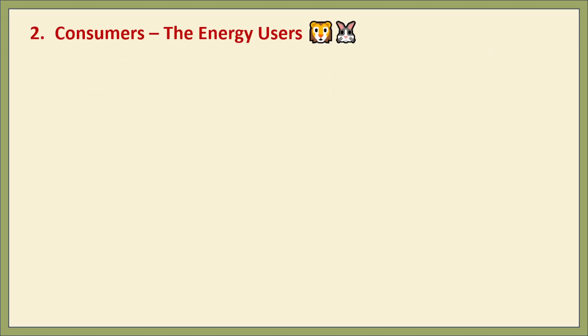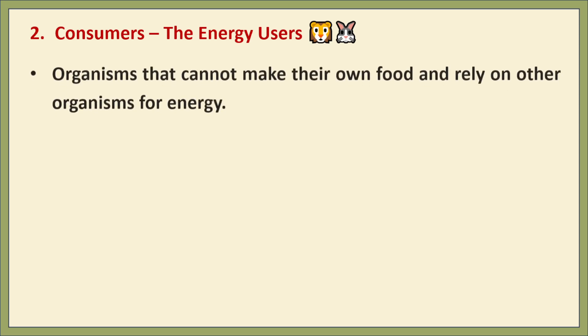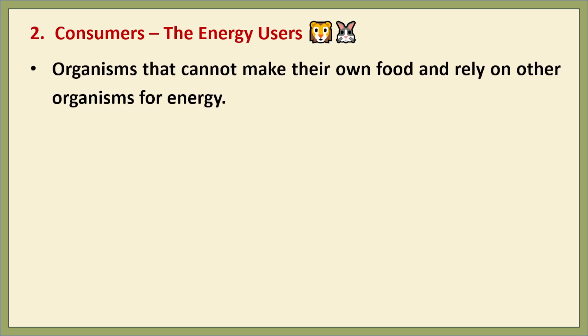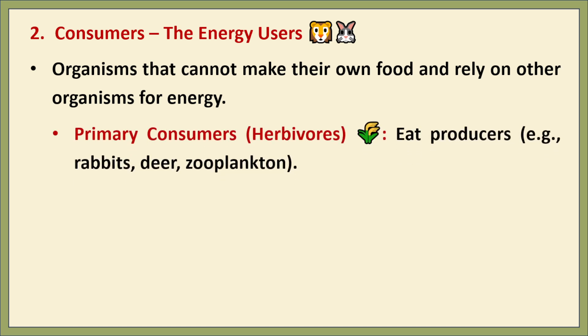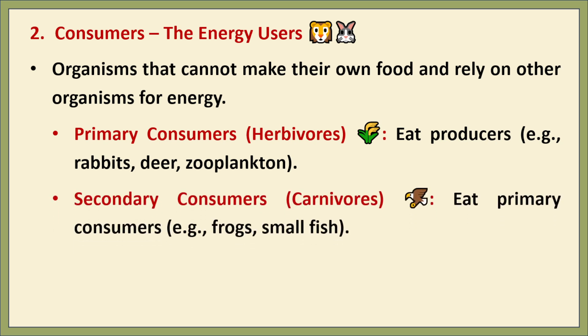The second one is consumers. Consumers are organisms that cannot produce their own food and rely on other organisms for energy and nutrients. They are classified based on their diets and position in the food chain. Primary consumers feed directly on producers — for example, deer, rabbits, zooplankton, silkworm, and grasshopper. Secondary consumers feed on primary consumers; examples include frogs, small fishes, and small birds.